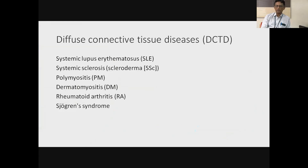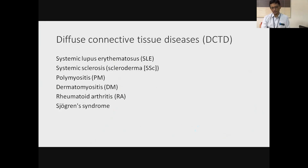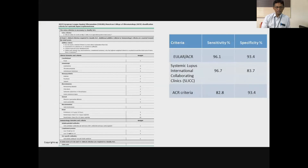The second half of the session covers the specific connective tissue diseases. When we say connective tissue disease, we include six diseases: lupus, scleroderma, polymyositis and dermatomyositis, rheumatoid arthritis, and Sjogren's. If a patient fulfills criteria for any of these, you label them with that specific disease. The 2019 ACR EULAR classification criteria for lupus is a weighted criteria where different manifestations have been given different weighted scores.